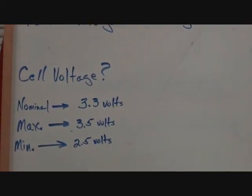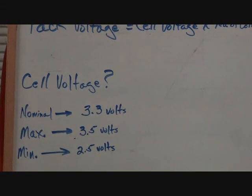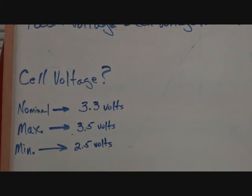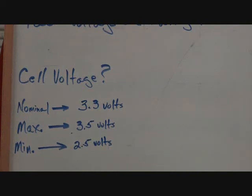The cell voltage of a lithium iron phosphate cell, nominally, is 3.3 volts. But the maximum that we charge them to is 3.5 volts. So when it is first charged, those cells will each be 3.5 volts. And then there's a minimum that we will never discharge beyond. Matter of fact, we don't take ours down this low even, but the maximum that you can discharge it to is 2.5 volts.